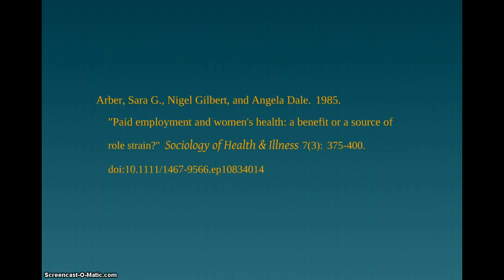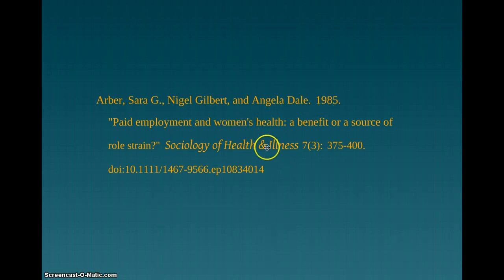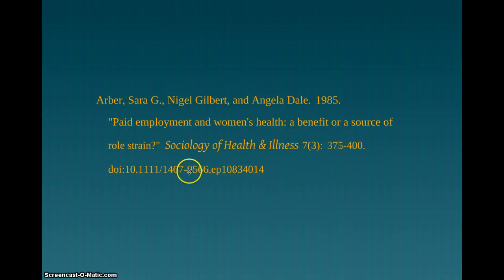Here's a journal article that has a digital object identifier. The parts of this citation include the author statement, the year the article was published, the title of the article, the journal title, the volume and issue number of the journal, the pages in which the article appears, and the full number for the DOI.